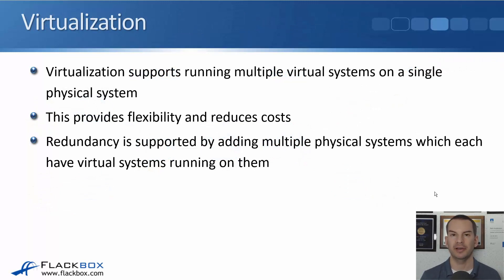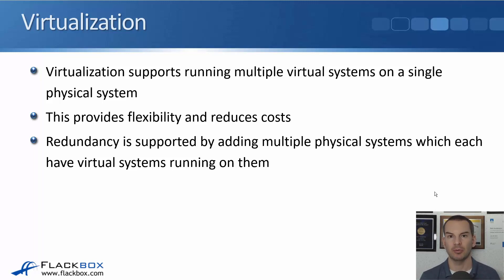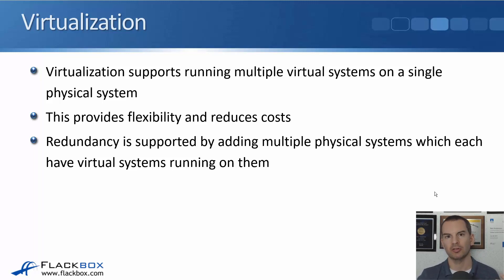To summarize virtualization: it supports running multiple virtual systems on a single physical system, providing flexibility and reducing costs. Regarding redundancy — if a physical box fails, you lose all the VMs on it — but redundancy is actually often easier to implement in a virtualized environment than with dedicated physical appliances. You add multiple physical systems each running virtual systems, and it's straightforward to move VMs from a failed physical box to another, automating failover so you're back up very quickly.